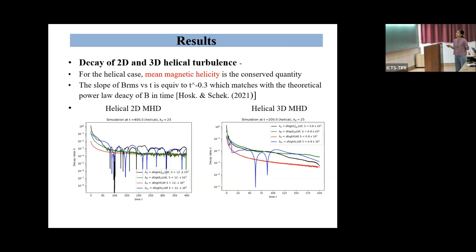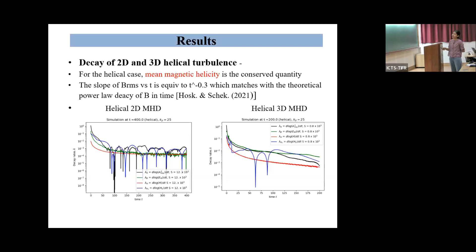Coming to the results: for the decay of 2D and 3D helical turbulence, we already said theoretically that mean magnetic helicity is the conserved quantity, and numerically we also get this. These are the decay rates of different quantities — the black one corresponds to vector potential squared, green to magnetic energy, red to mean magnetic helicity, and blue to helicity variance. We can see from both the 2D and 3D plots that the red curve, which is the decay rate of mean magnetic helicity, is the lowest, showing that mean magnetic helicity is the conserved quantity for helical MHD decay simulations.